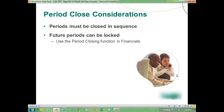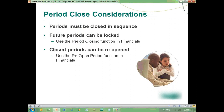Future periods can be locked. There are different statuses for periods: if a period is open, you can record transactions against it; if closed, the period is closed to additional transactions; and there is a status called 'not open,' which means the period is locked and empty — no transactions, but transaction entry is not allowed yet. That's great for managing future periods in a fiscal year. And closed periods can always be reopened — there is a very simple process for reopening a period.